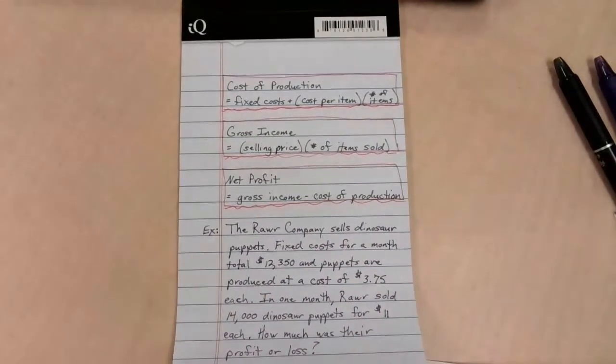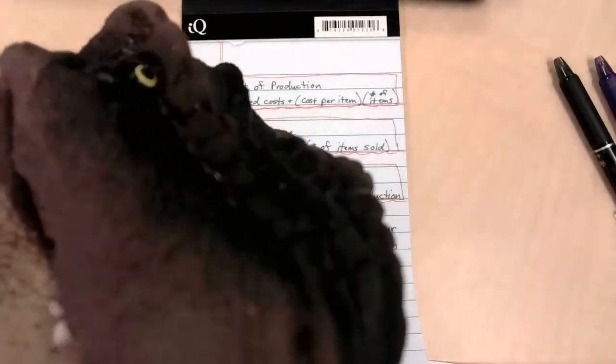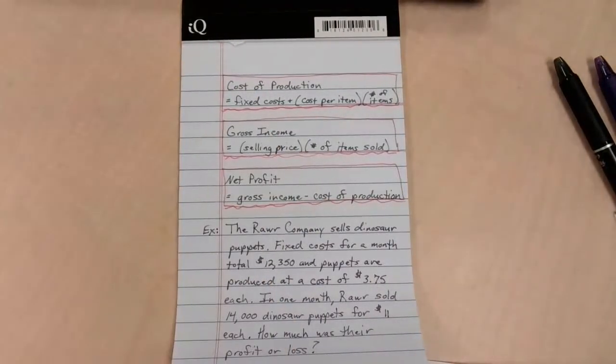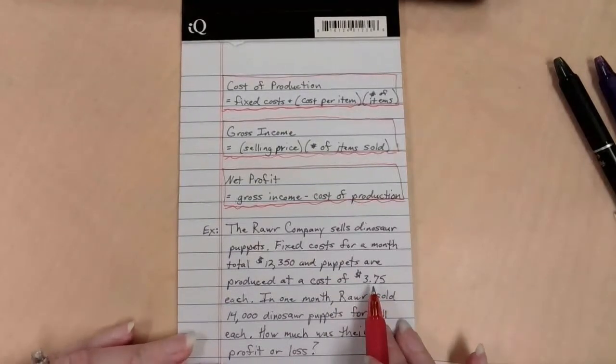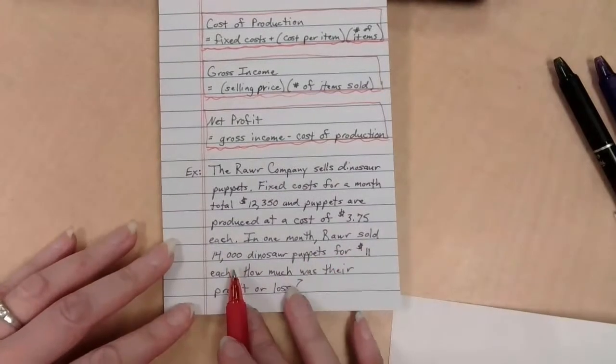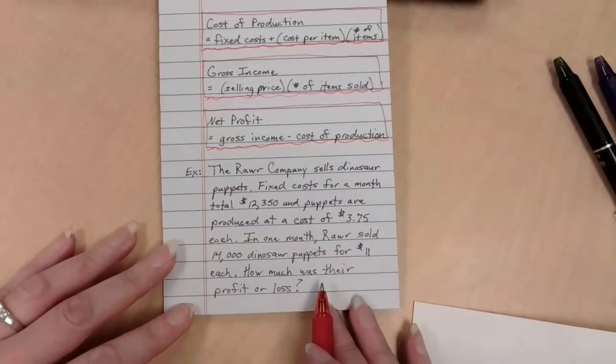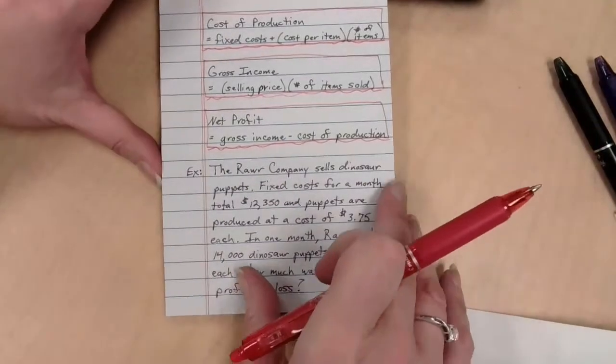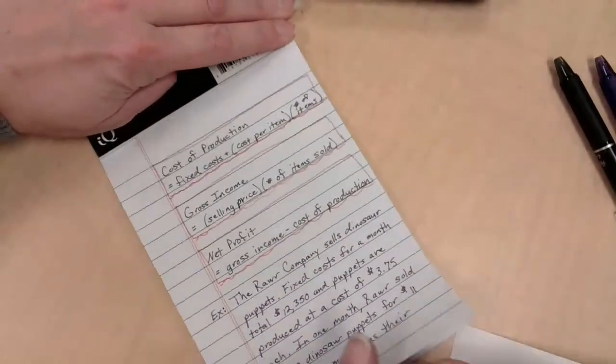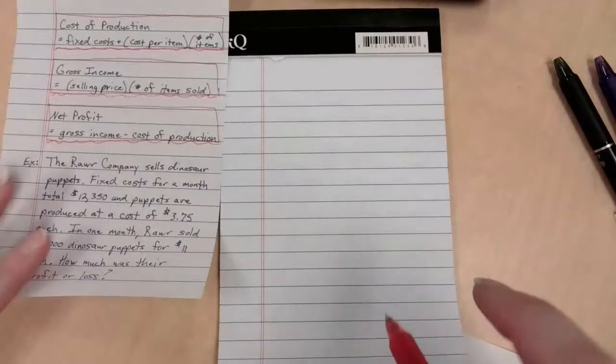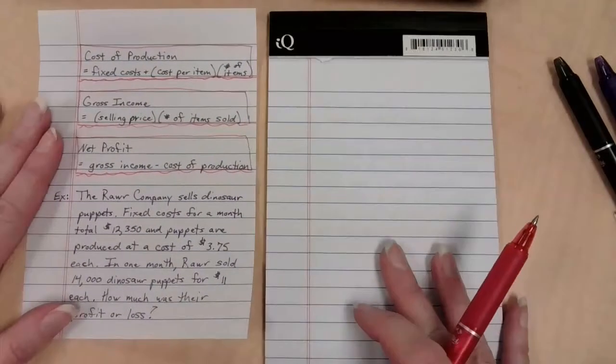So these three things kind of go together and I've got a gigantic example here for us that puts it all together. I've got the RAR company and it sells dinosaur puppets because why not? Fixed costs, every month I have to pay $12,350 and on top of that to make a puppet it's going to cost me $3.75 in materials for each and every puppet. In one month RAR is going to sell 14,000 of these things and they're going to sell them for $11 a piece. So how much profit or loss do we have? Here's our given information. Let's see if we can piece this together.